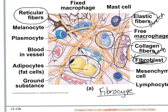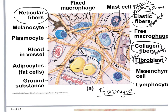Another type of cell is the mast cell, which is very much like a white blood cell called the basophil, but it stays fixed in the tissue and doesn't go into blood. It produces two substances: heparin and histamine, which cause inflammation. When the cell is damaged, the mast cell releases histamine and heparin, bringing more fluid and blood to the area.